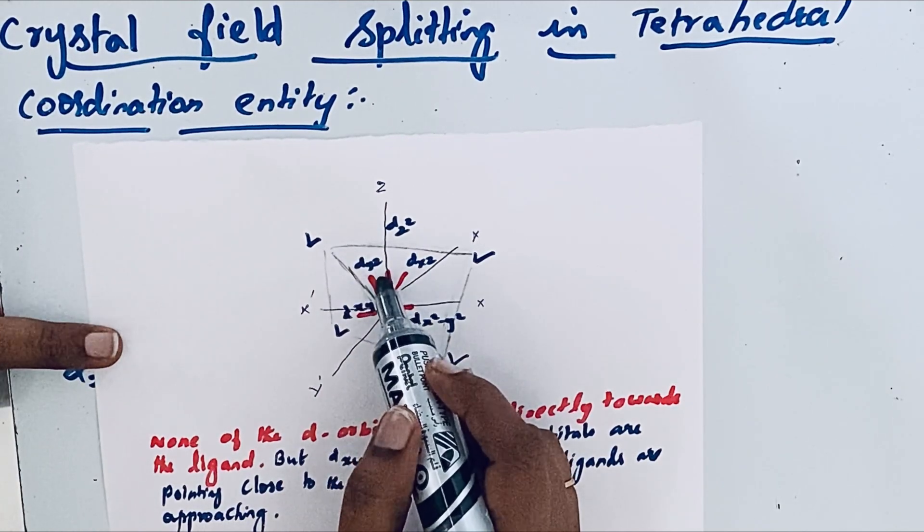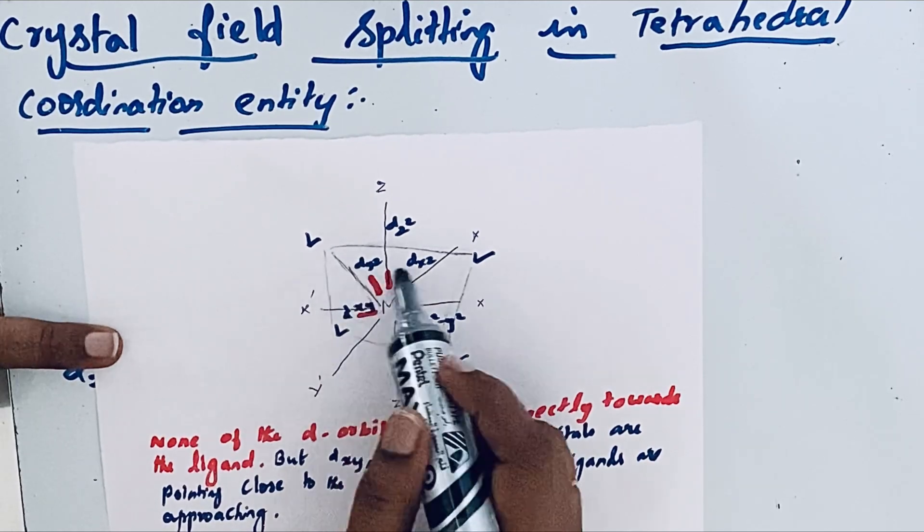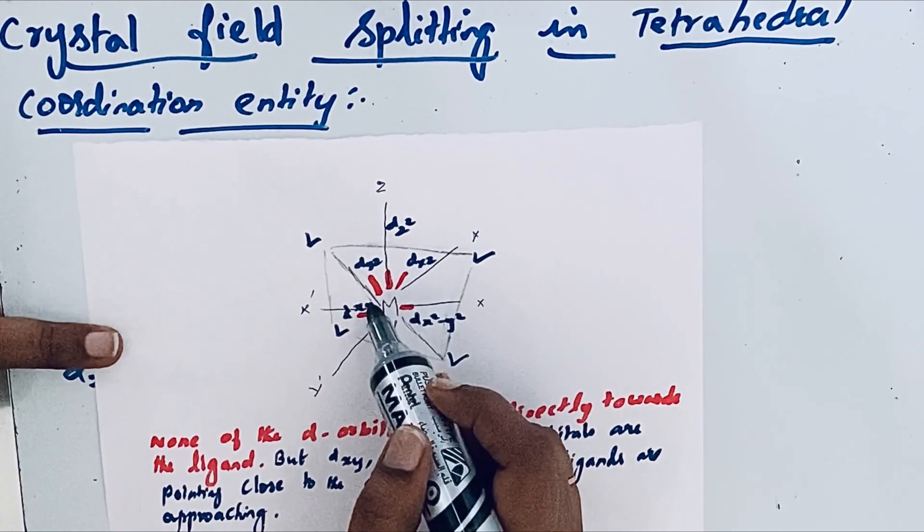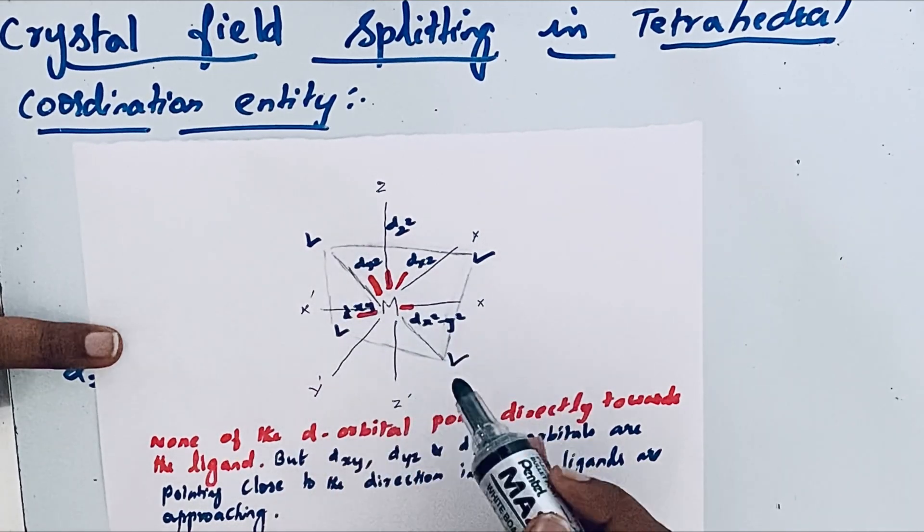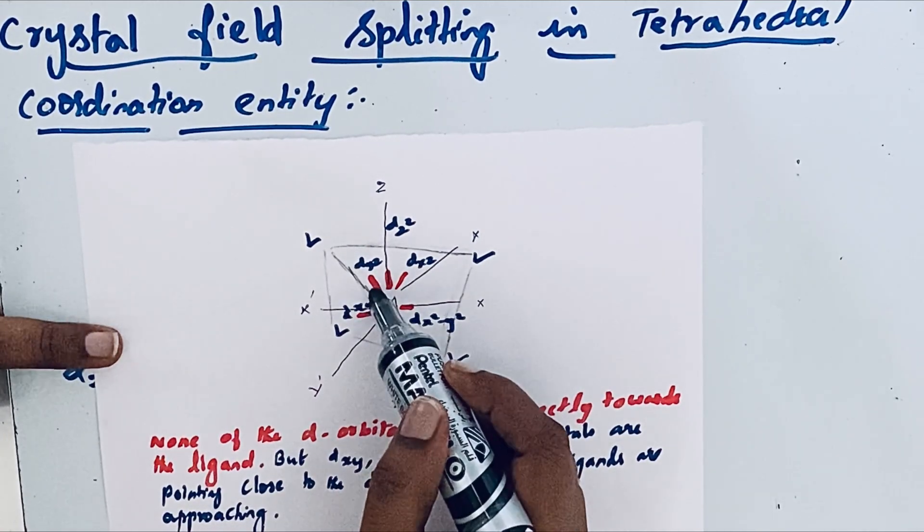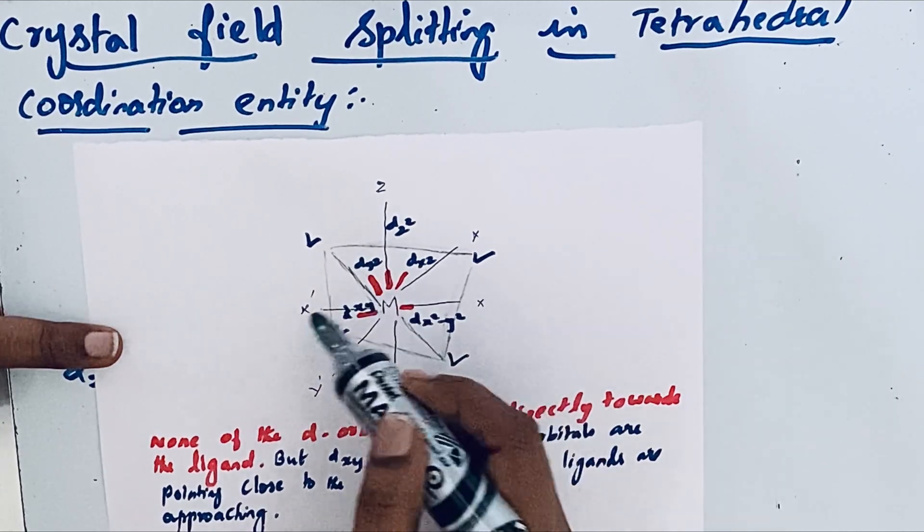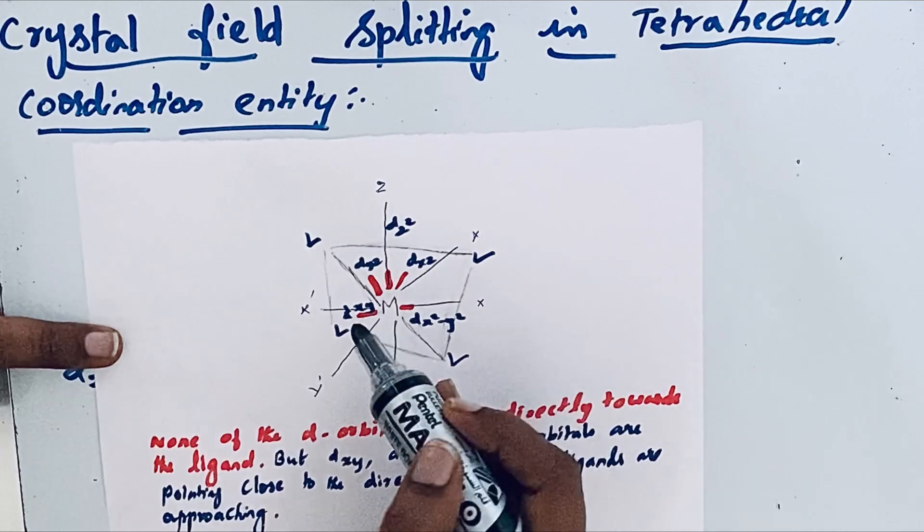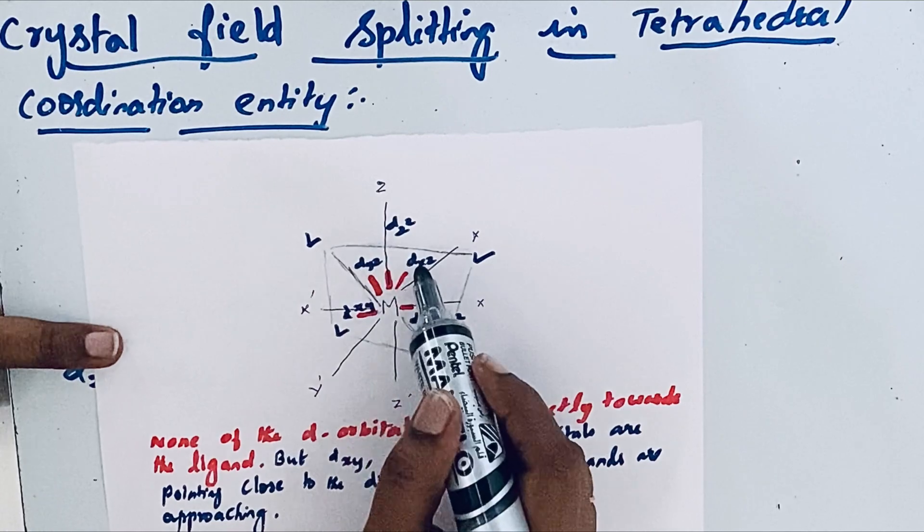But these three orbitals, that means dxy, dyz, and dxz, they are just close to the directions in which ligands are approaching. So that is why what will happen is this will experience more repulsion. More repulsion means greater the energy. So that is when compared to dx squared minus y squared and dz squared, these three orbitals t2 orbitals energy is increased.